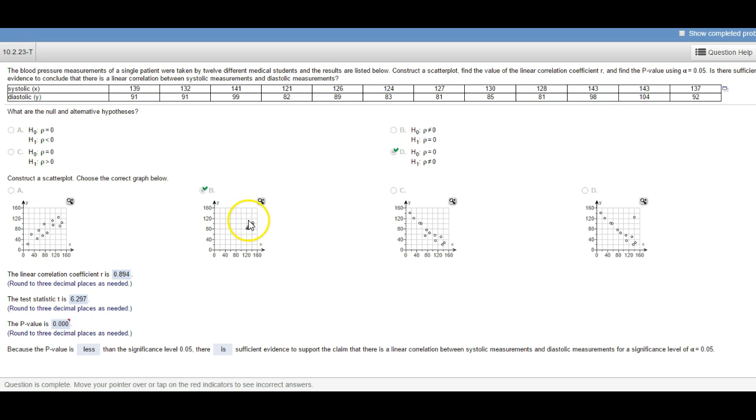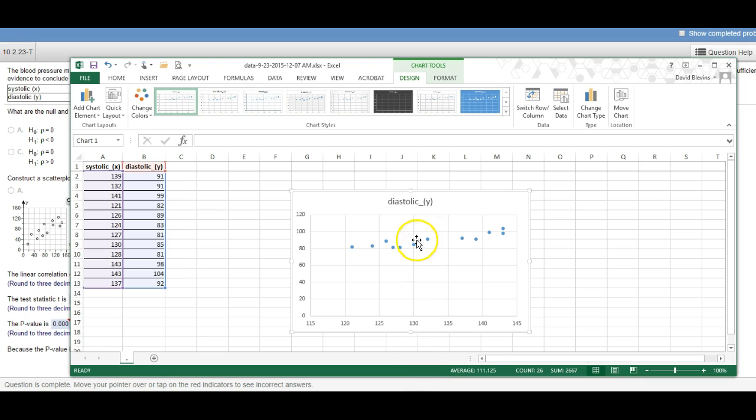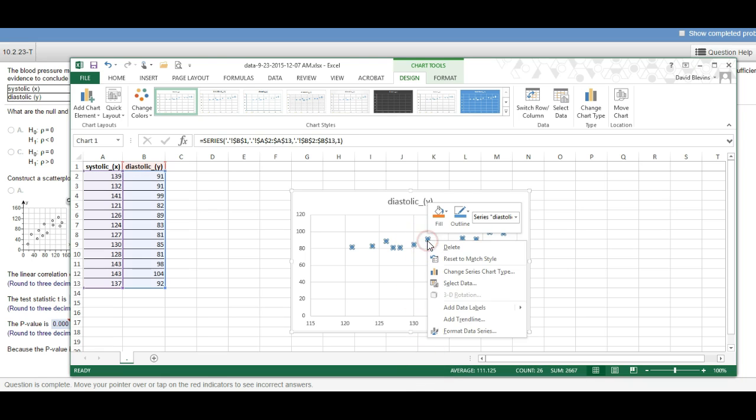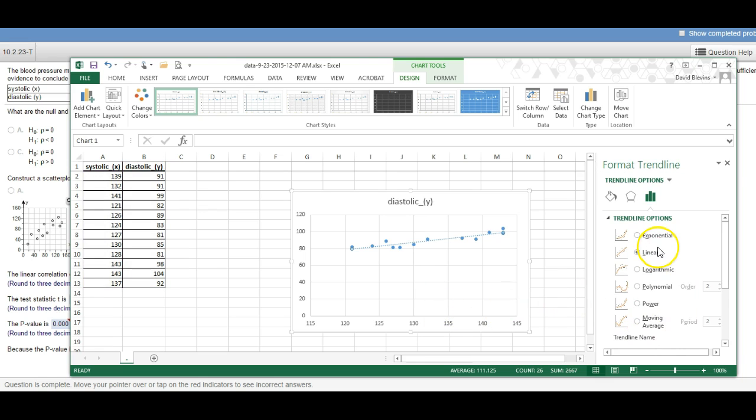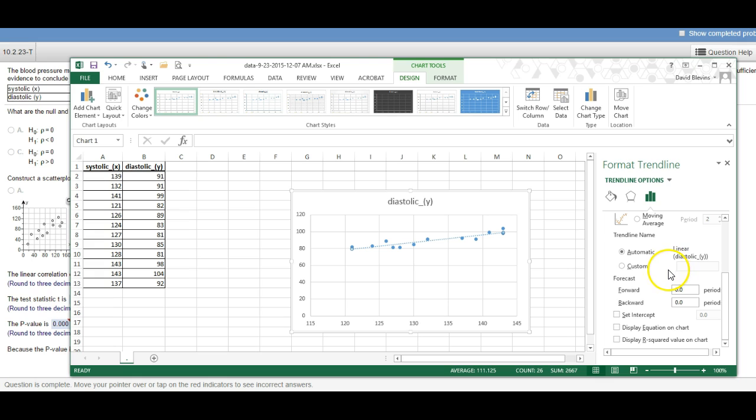So that's the only one that makes sense here. Now once we have the scatter plot we can run the regression. I'm going to show you a couple ways to get this. You can get that from Excel once you have your scatter plot. You can right-click any data point and then click on add trendline.